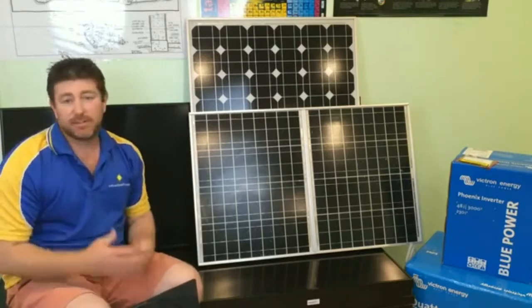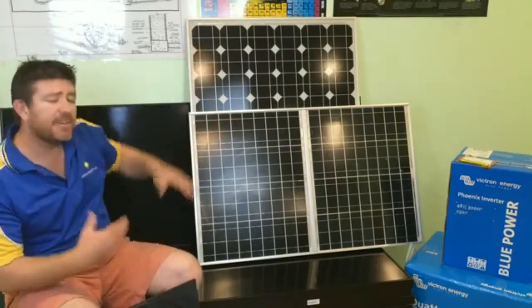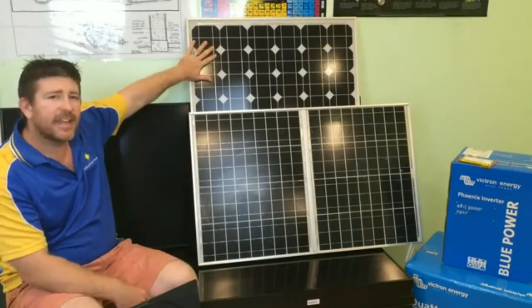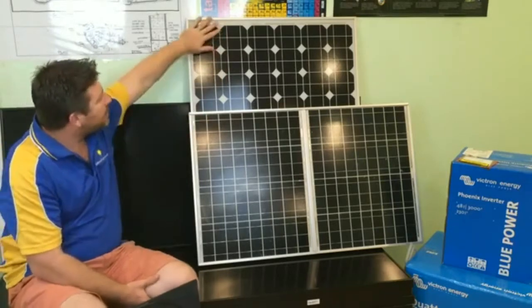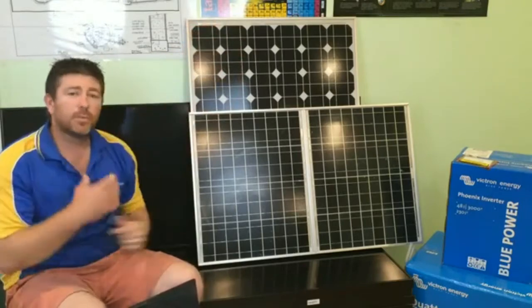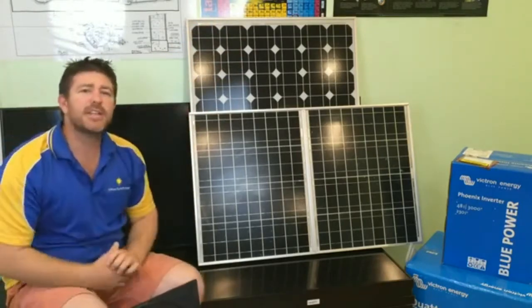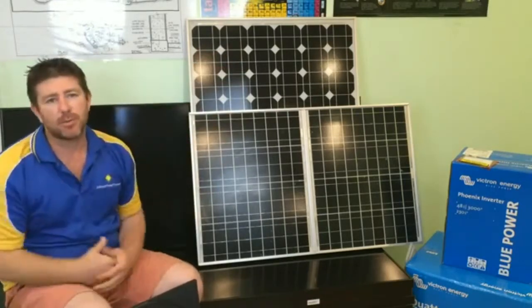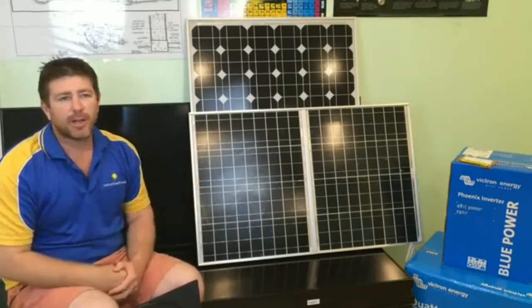It's really getting to understand your specific situation. Now just quickly to give you a brief understanding with the downsides to a crystal panel: what happens is when one of these cells is shaded, that panel will stop performing. So if they're all wired in series at high voltages on your roof, when one of your panels stops working, your whole system stops working. If you get a tree that shades one of those panels, it'll stop working.